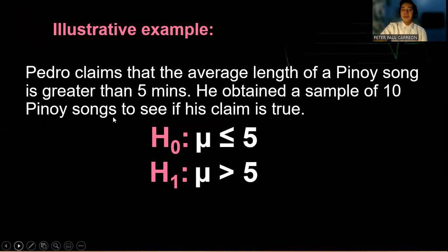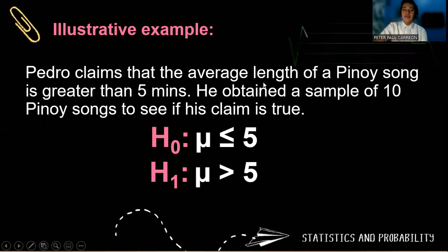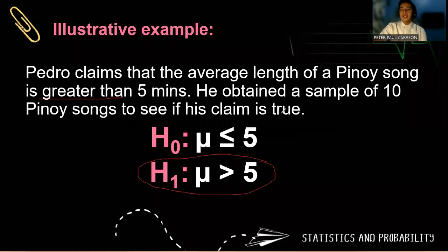What about if Pedro claims that the average length of a Pinoy song is greater than 5 minutes? Notice that the greater than symbol is written on the alternative hypothesis, because the alternative hypothesis gives the direction of the test. Later we will talk about the directions of the test.